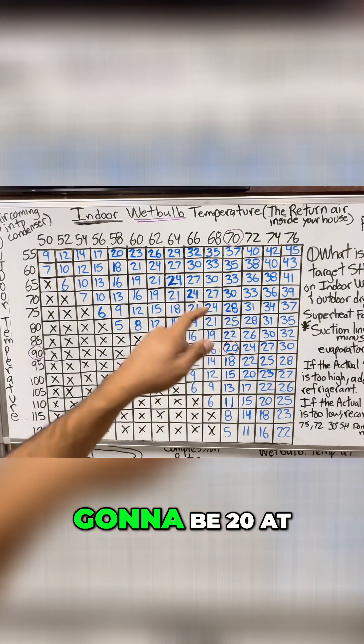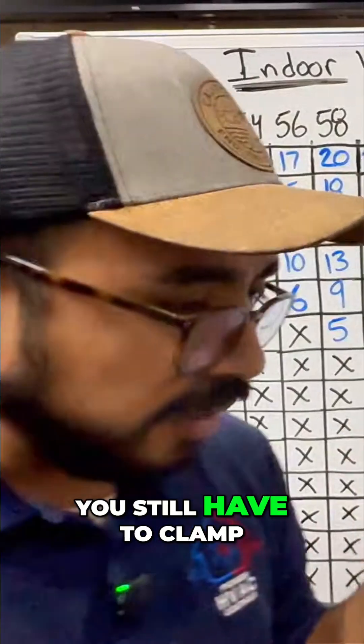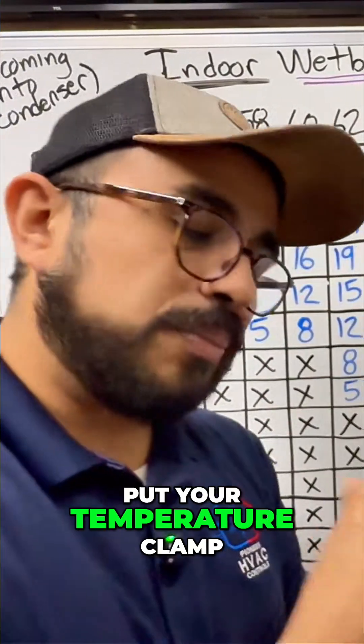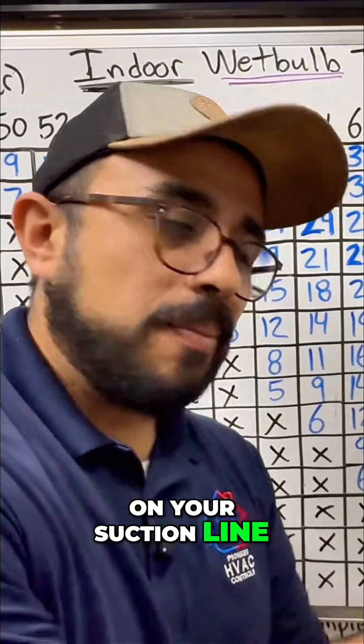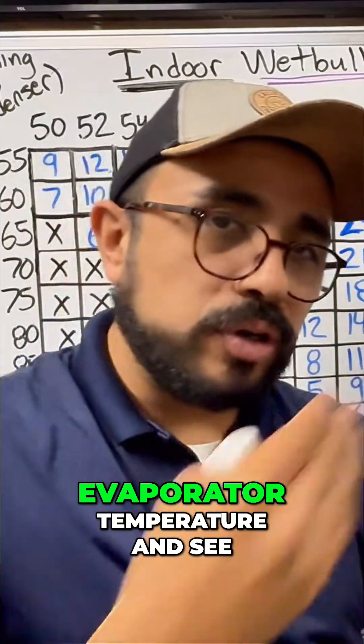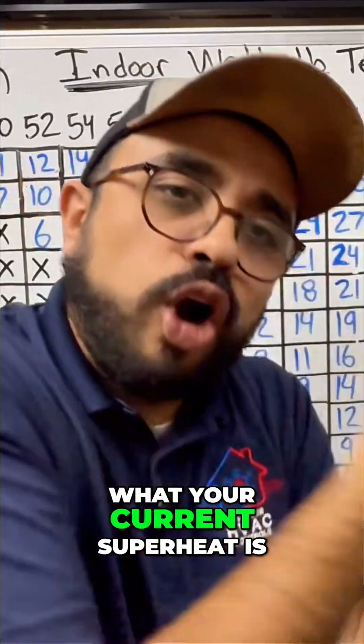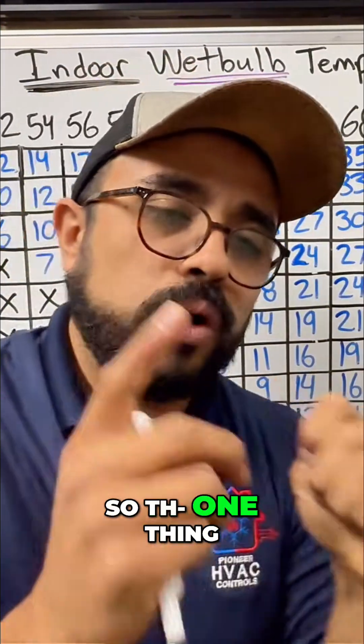It doesn't mean it's gonna be 20 at the moment. You still have to put your temperature clamp on your suction line, subtract that by your evaporator temperature and see what your current superheat is.